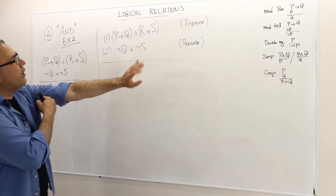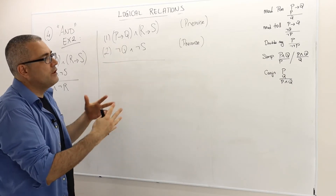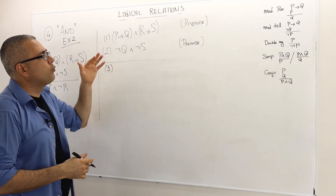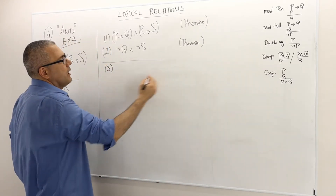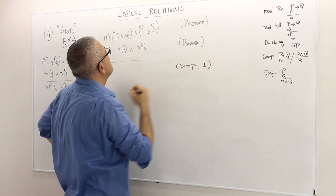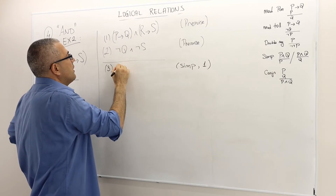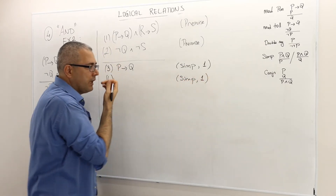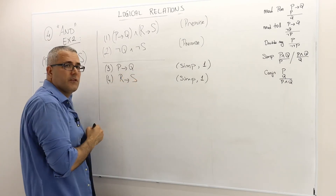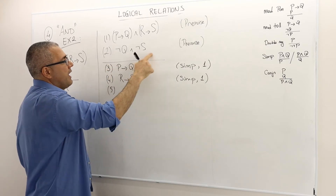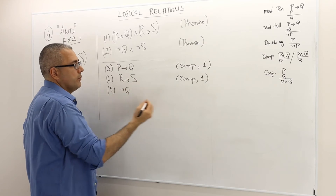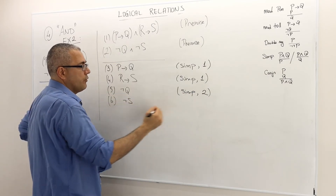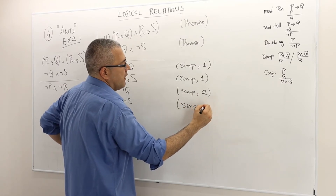So I have two premises and they both have 'and', so I can just use the simplification rule. Let's write down the conclusions by using simplification. Simplification of line 1 gives P implies Q. Again, simplification of line 1 gives R implies S. Because premise 2 is true, not Q must be true — simplification of line 2. And not S must be true as well — again, simplification of line 2.